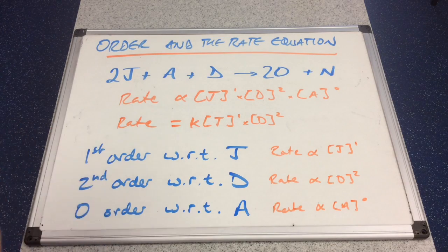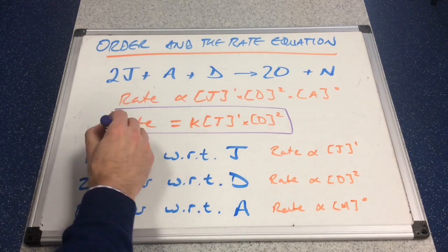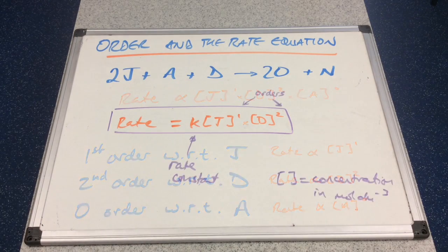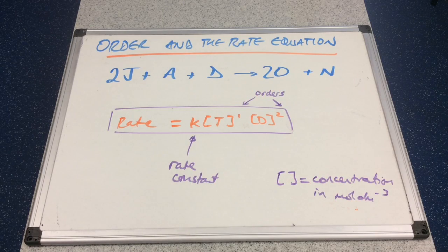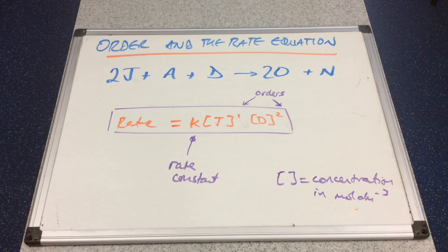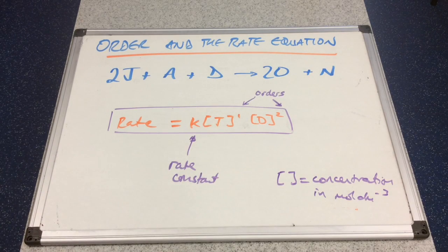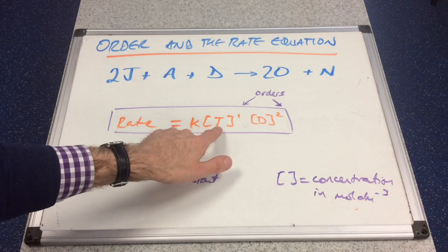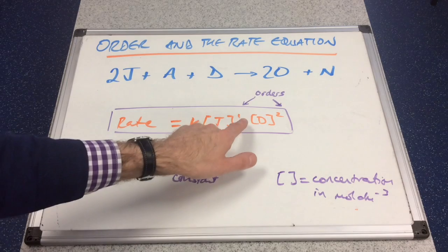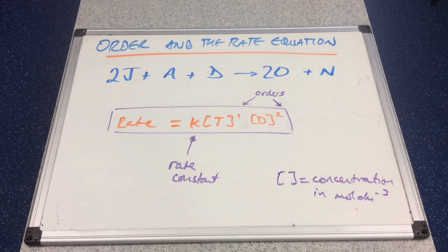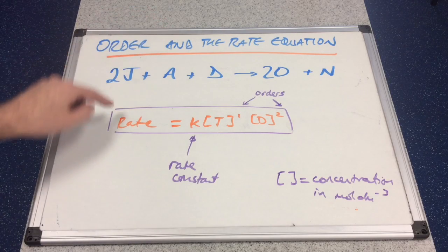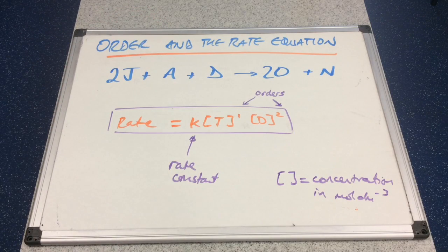So the rate equation for this reaction, based on the information, would be: rate equals K — the rate constant — multiplied by the concentration of reactant J (square brackets signify concentration in moles per decimetre cubed), raised to the power 1, multiplied by the concentration of D raised to the power 2. A does not feature in the rate equation because it was zero order — raising its concentration to the power 0 gives 1, so you can ignore it.